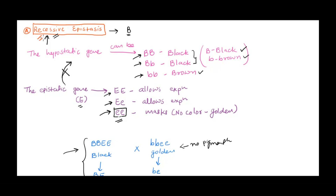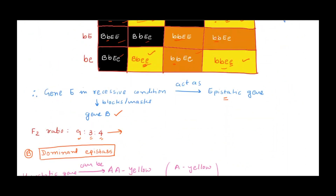No matter what configuration the hypostatic gene is in, it cannot be expressed if the epistatic gene is in homozygous recessive condition. If the epistatic gene is in homozygous or heterozygous dominant condition, there is no problem. Now let's move on to dominant epistasis.